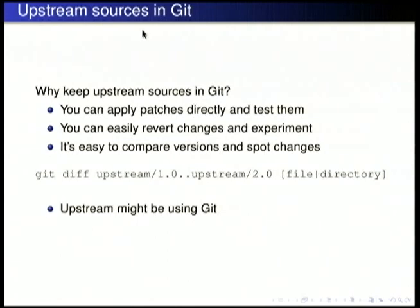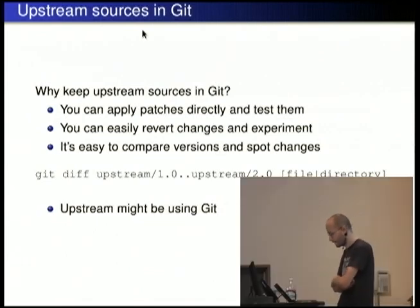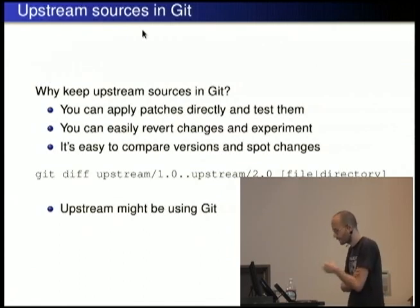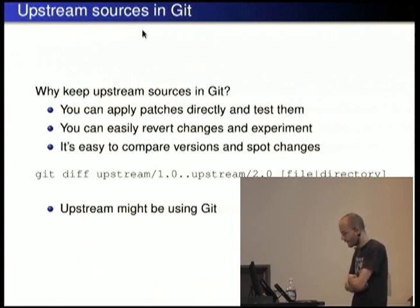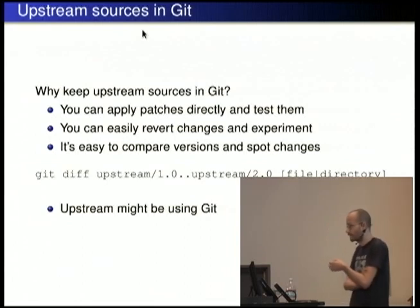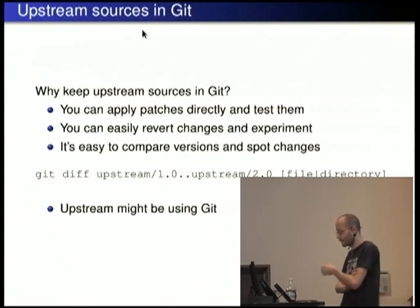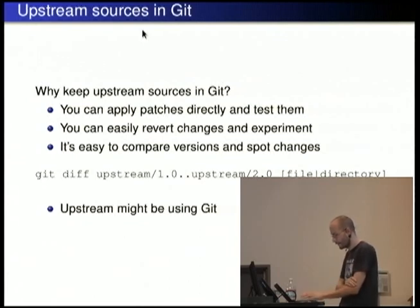Why would you have the upstream sources in Git at all? Many people using Subversion don't want to — they just keep the Debian packaging in the Debian branch. I find it convenient because you can fetch patches from upstream, apply them, and build the Debian package to see if it works. You can experiment easily with a distributed VCS, and since Git is space-efficient it doesn't really matter. It's also very convenient for comparing versions. And last but not least, upstream might be using Git anyway — so you just clone the upstream repository, create your Debian branch, and pull new versions.